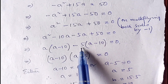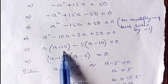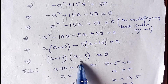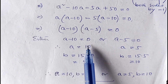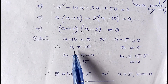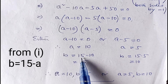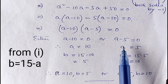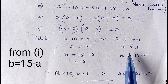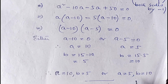From the last two terms, taking −5 common gives −5(a − 10). Both parts are the same, so taking (a − 10) common we get (a − 10)(a − 5) = 0. Either a = 10 or a = 5. From equation 1, b = 15 − a. If a = 10, then b = 5. If a = 5, then b = 10. Therefore the required numbers are 5 and 10.